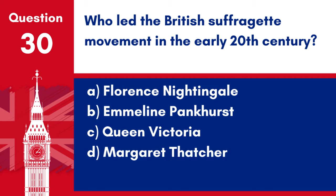Question 30. Who led the British suffragette movement in the early 20th century? a. Florence Nightingale. b. Emmeline Pankhurst. c. Queen Victoria. d. Margaret Thatcher. Answer: b. Emmeline Pankhurst. Emmeline Pankhurst was a leading figure in the British suffragette movement, which fought for women's right to vote.